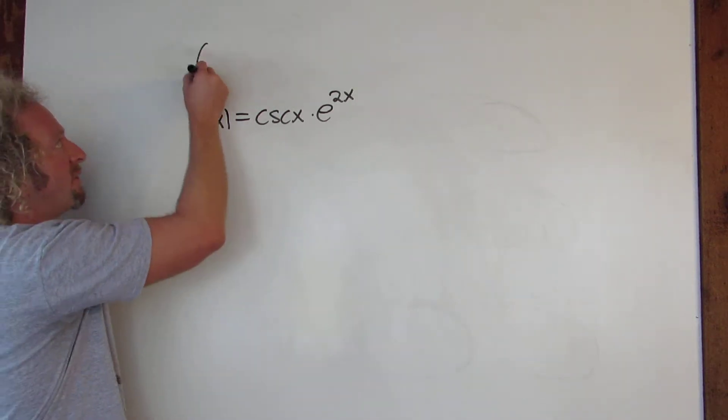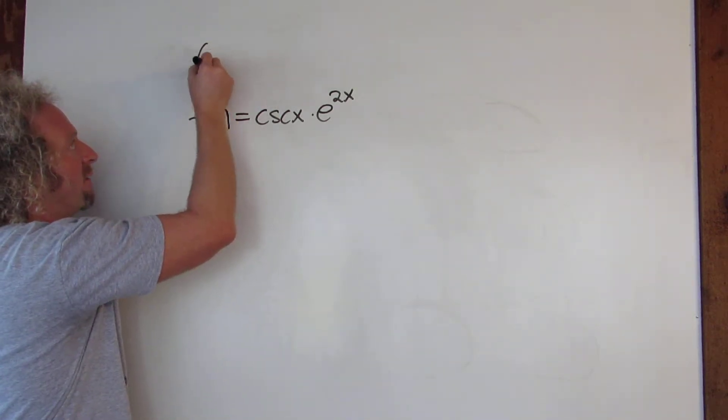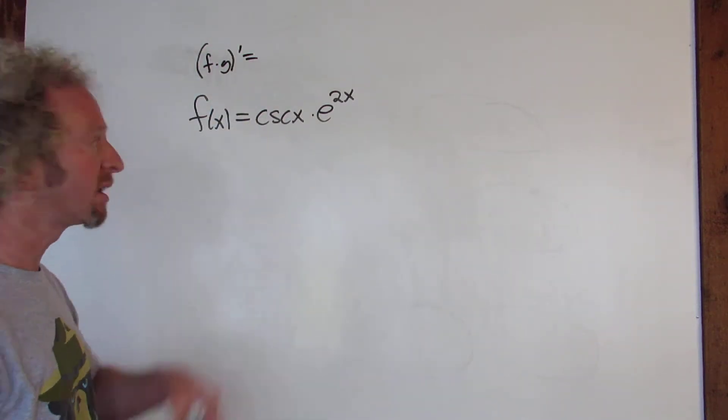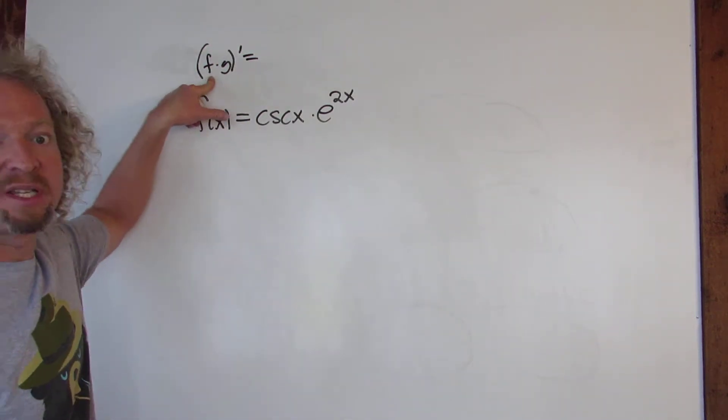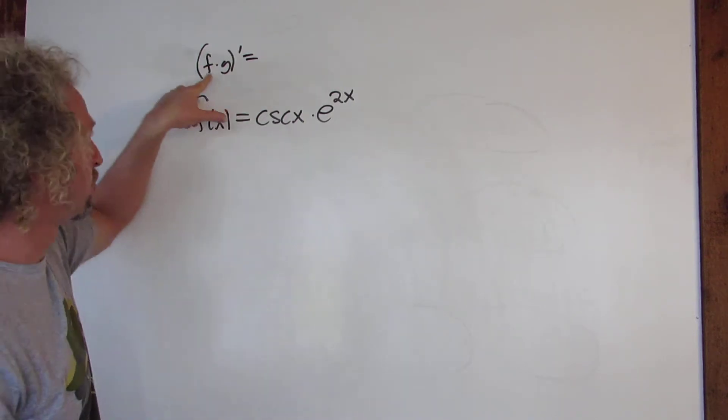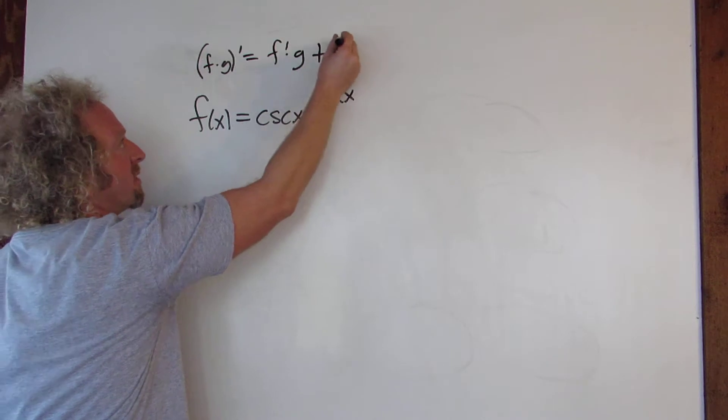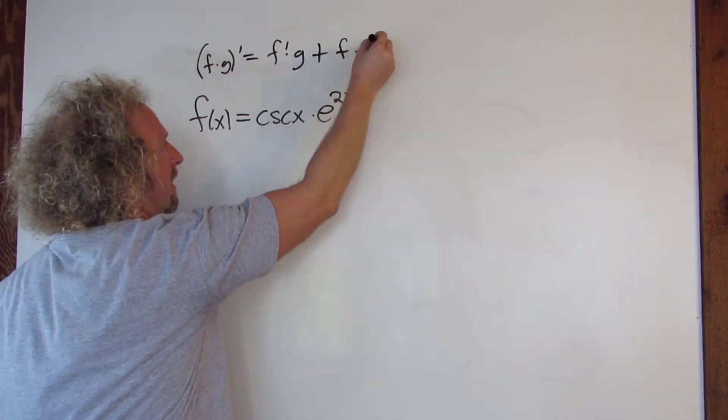So recall the product rule says if you have a function, say f times g, and you take the derivative of the product—I think of f as the first piece and g as the second piece—so it's the derivative of the first times the second plus the first times the derivative of the second.